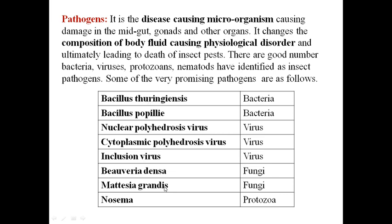Some very promising insect pathogens identified by scientists are: Bacillus thuringiensis (bacteria), Bacillus popilliae (bacteria), Nuclear Polyhedrosis Virus, Cytoplasmic Polyhedrosis Virus, Inclusion Virus, Beauveria densa (fungus), Metarhizium anisopliae (fungus), and Nosema (protozoan). These microorganisms are now widely used as biological agents throughout the world. At minimum, Bacillus thuringiensis, Bacillus popilliae, and Nuclear Polyhedrosis Virus are important to remember.